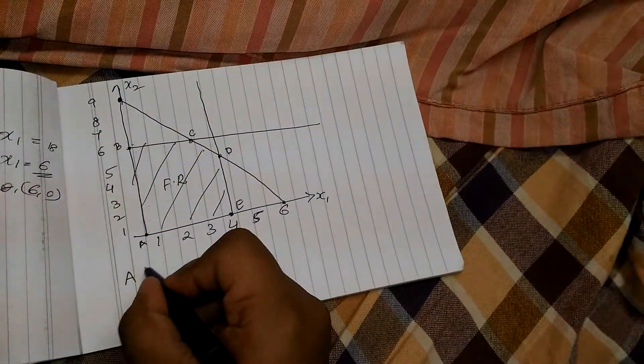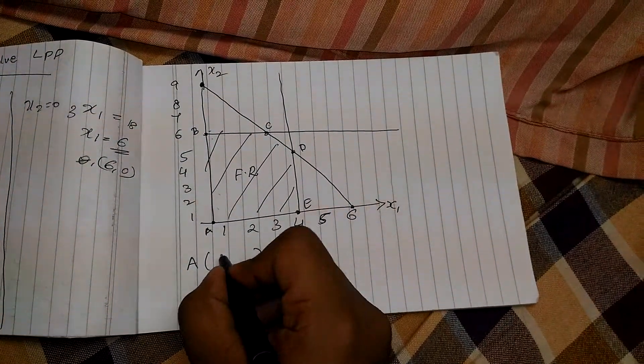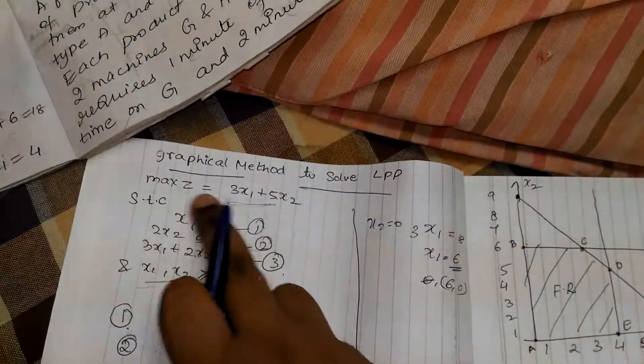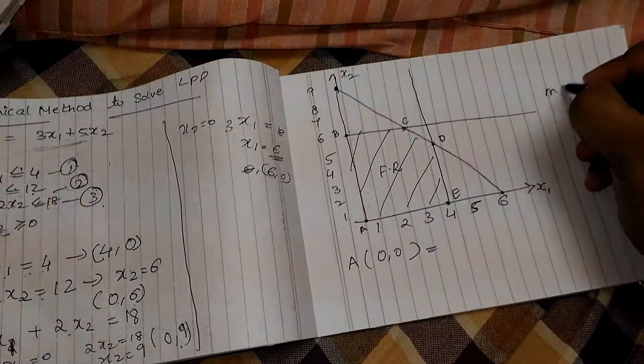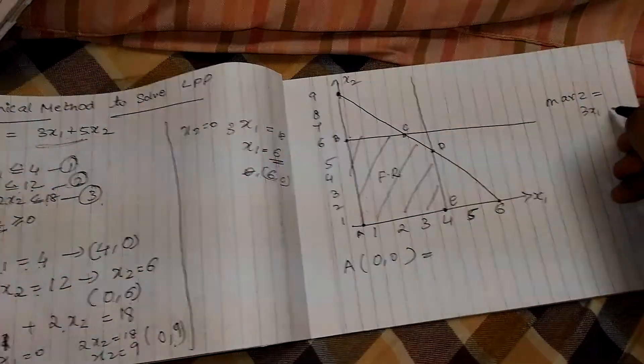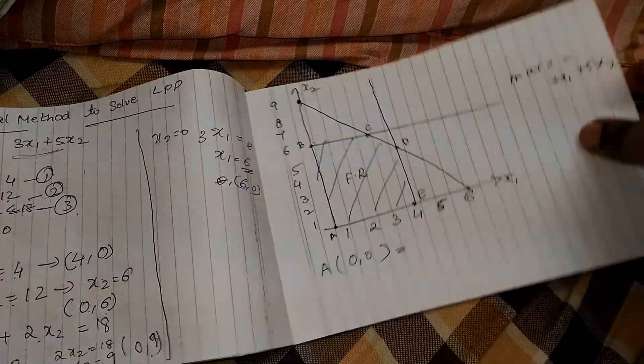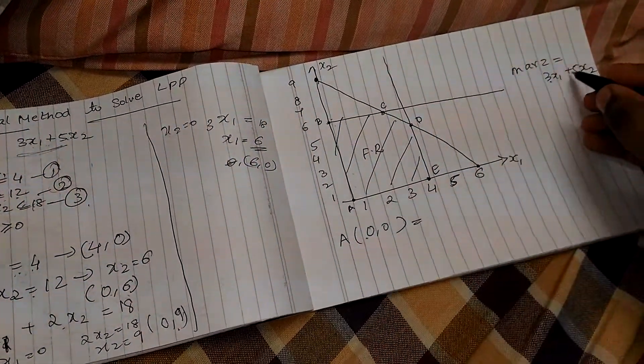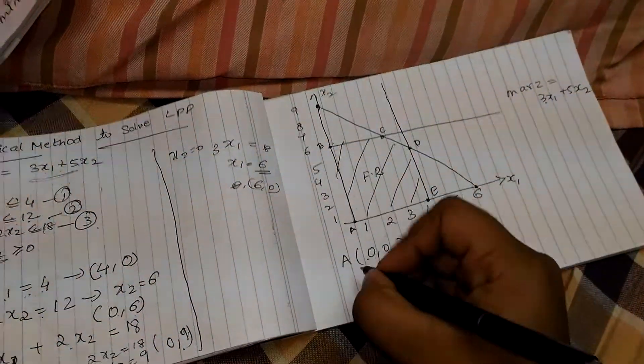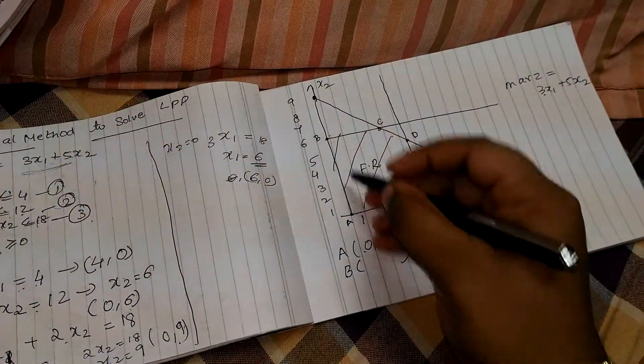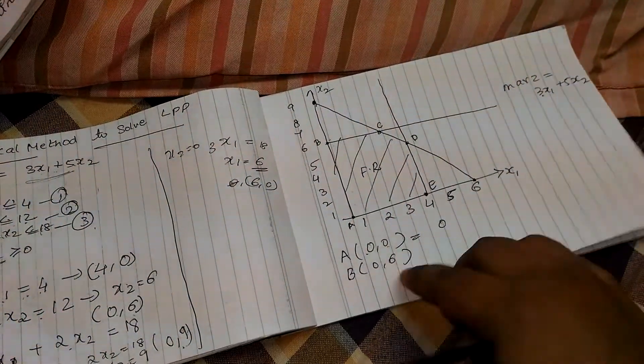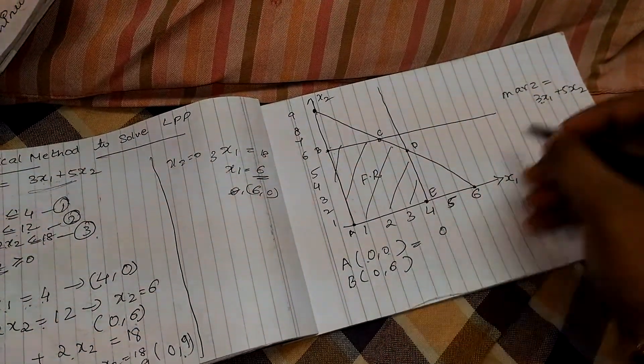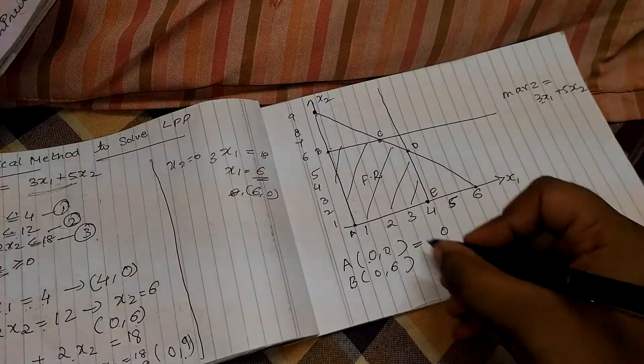The point A has x and y values as 0, 0 as it is in the origin. We need to substitute this value in our objective function, max z, z equal to 3x1 plus 5x2. Here we need to substitute. So, 3 into 0 plus 5 into 0, which is nothing but 0. And value for B is 0, 6. We need to substitute this value in this. So, 3 into 0, x1 is 0, and x2 is 6. So, 5 into 6, which is 30.